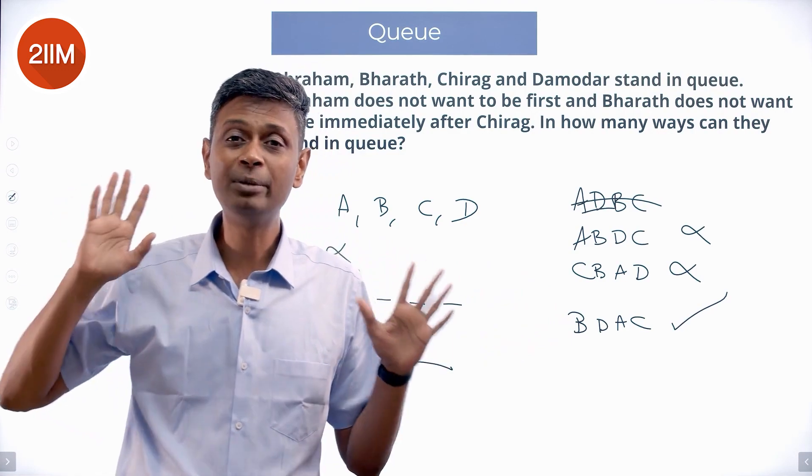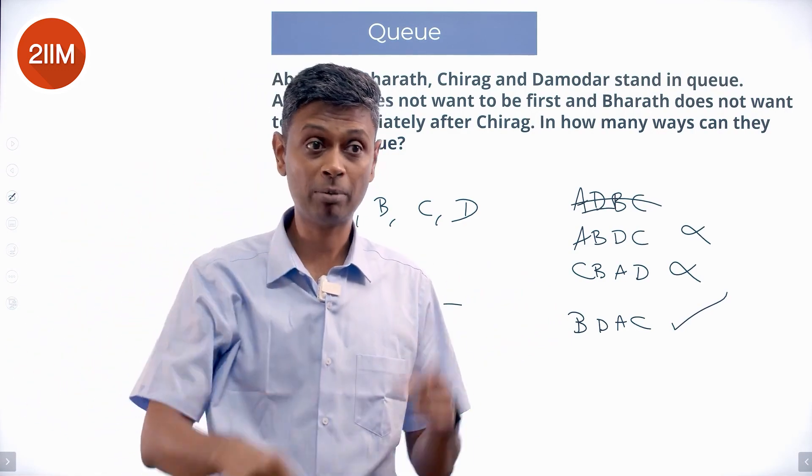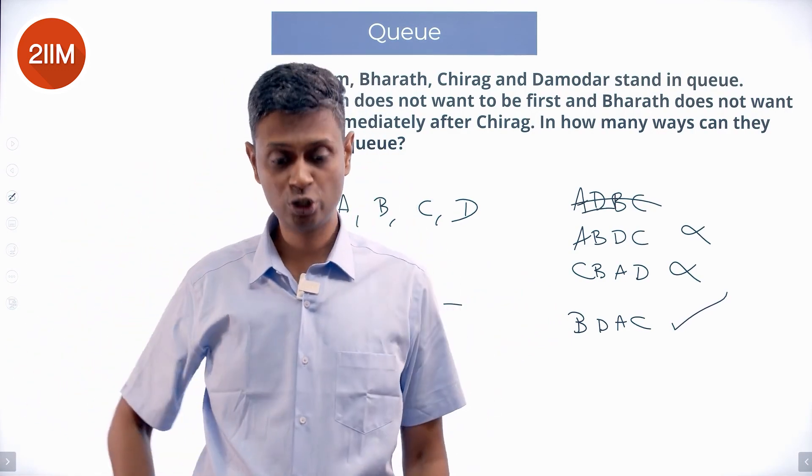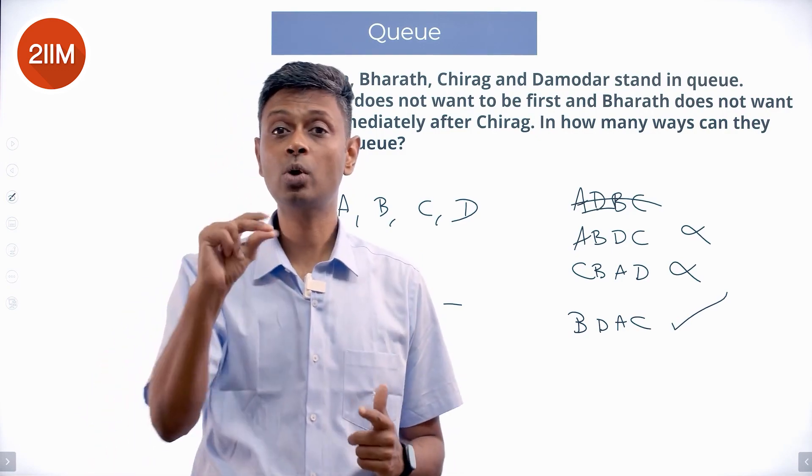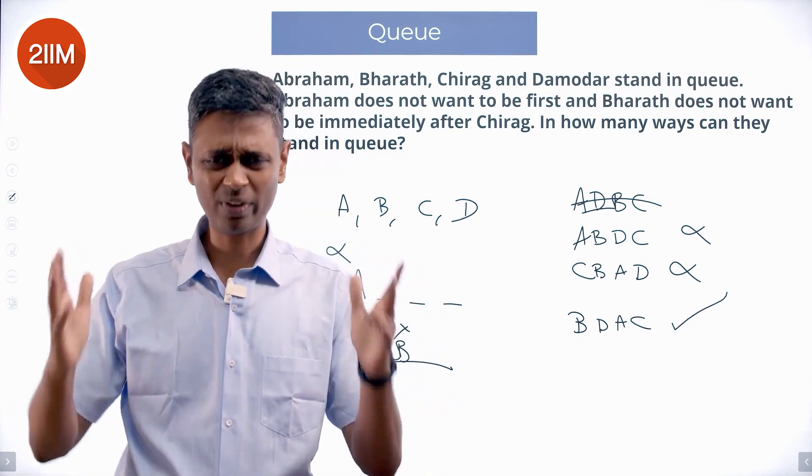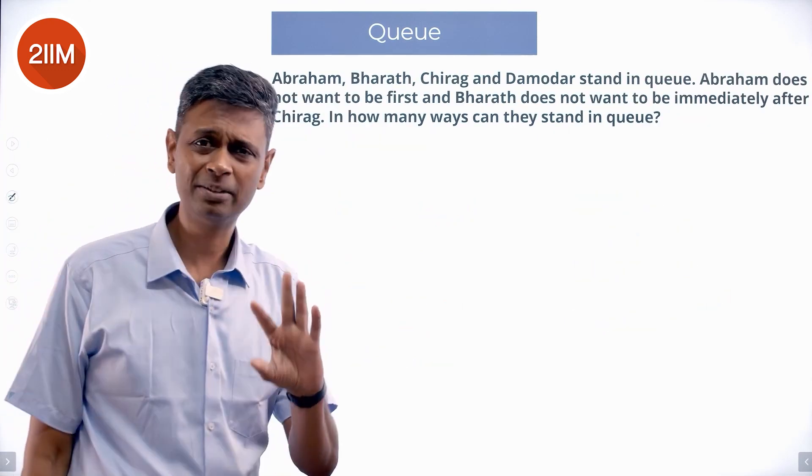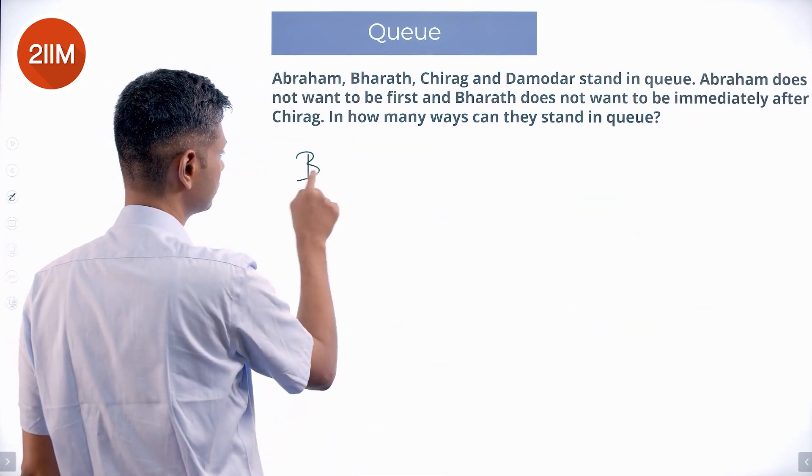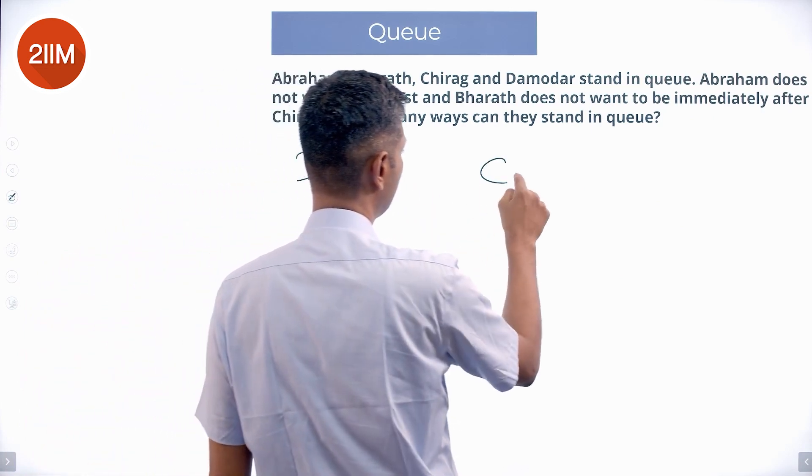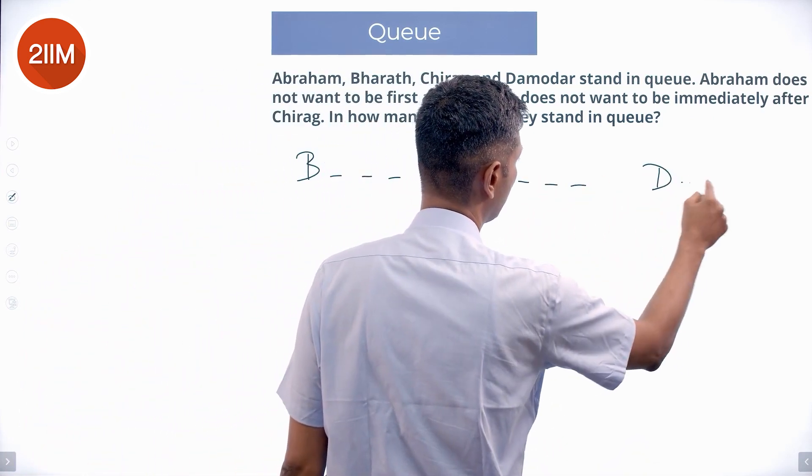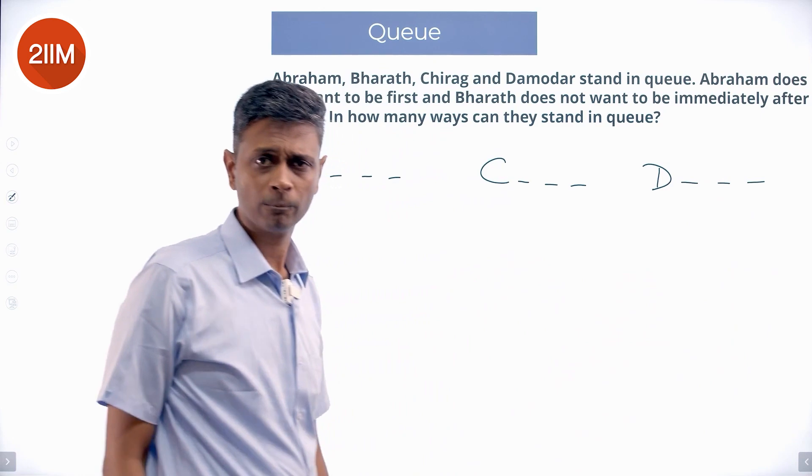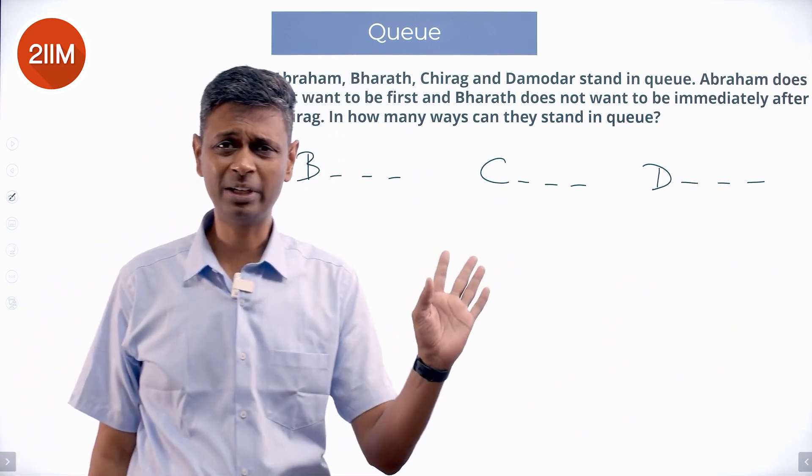I will write everything and count it. I will be smart about it, I will be intelligent about it, I will apply my brain about it. I will use good techniques about it, but I will count everything. Brute force, no fancy tricks. And so what could the first one be? First one cannot be A. First one could be B, first one could be C, first one could be D. So A standing first we are eliminating straight away.